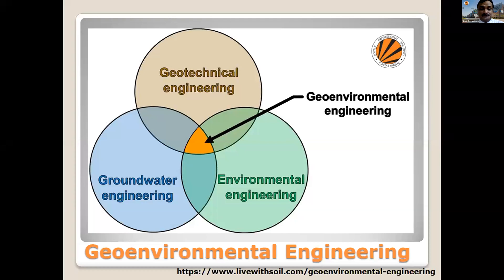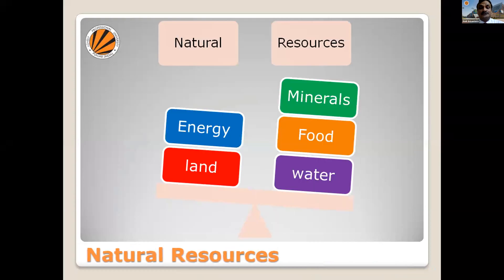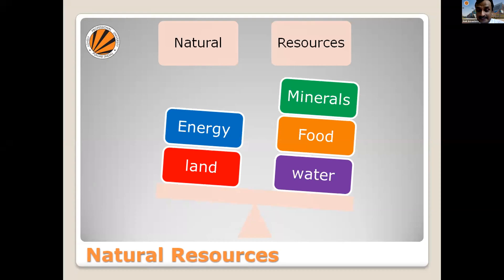I'd say it's a very major issue in the current scenario that you will understand in the next few slides. We all understand what a natural resource is. Energy, land, minerals, food, and water — everything that is available to us free of cost by nature is called natural resources. It is our duty and responsibility to maintain natural resources, not allow them to be contaminated, and not use them so extensively that nothing is left for future generations. That is called a sustainable way of dealing with natural resources.